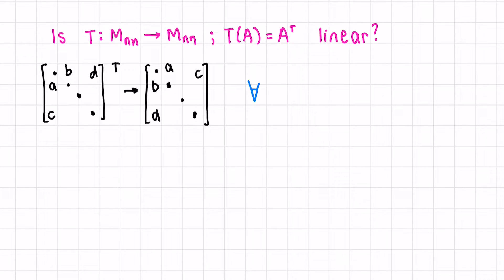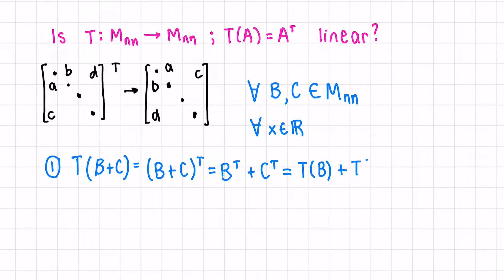First, let's define two matrices. This upside-down A means for any, let's say, matrix B and C, which are in our space of M N by N, square matrices with N rows and N columns. And let's also define a scalar for any X as an element of all real numbers. First, let's check the transformation of B plus C. This is the same as B plus C transposed. And if you know the properties of transposition, you would know that the T is applied to both elements. So we can rewrite this as B transposed plus C transposed. Or you could just think through it logically. If we add two matrices and then flip the rows and the columns, that's the same as if we flip the rows and the columns and then add the two matrices. But B transposed is the same as the transformation of matrix B, and C transposed is the same as the transformation of matrix C.